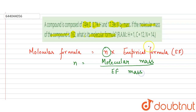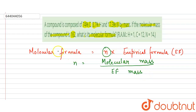The molecular mass is already given in the question. So we need to calculate the empirical formula first. Once we have the empirical formula, we can calculate the empirical formula mass, and from that we can find the value of n.